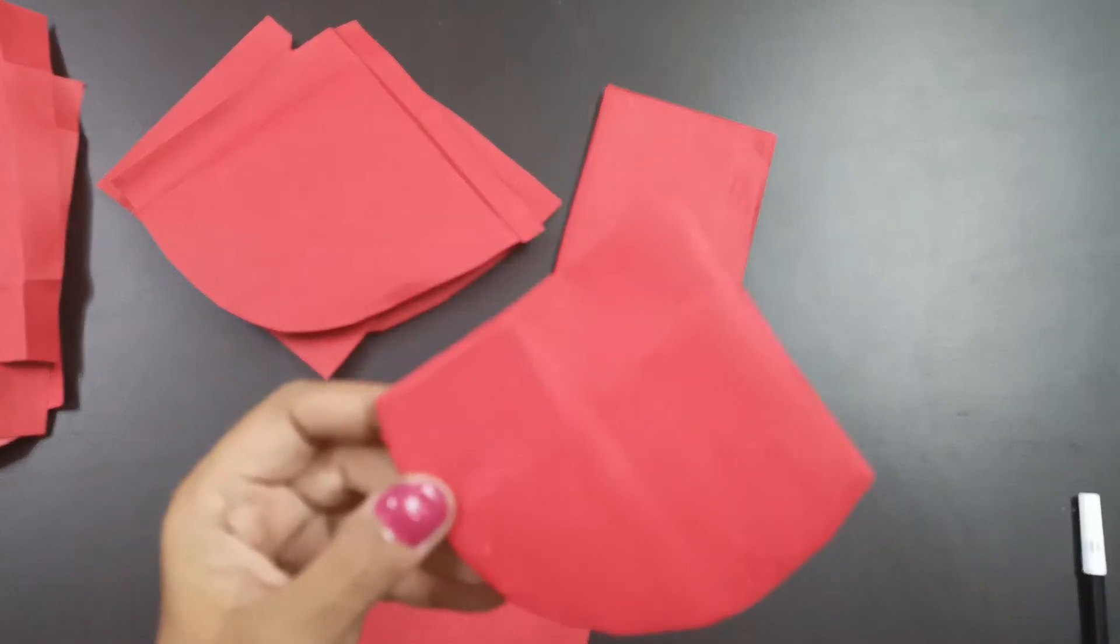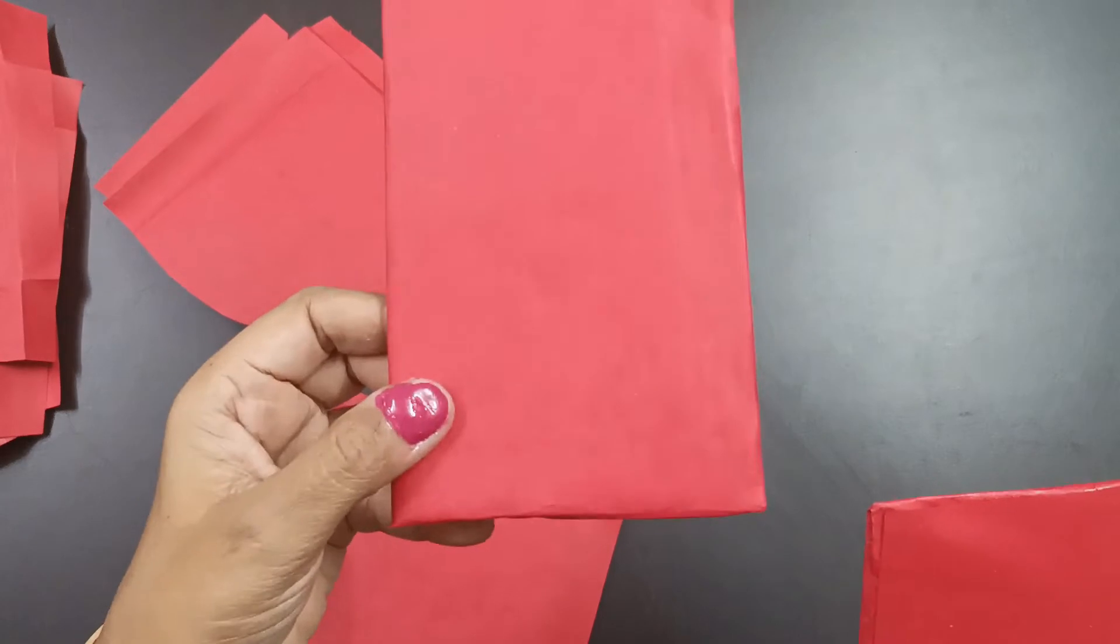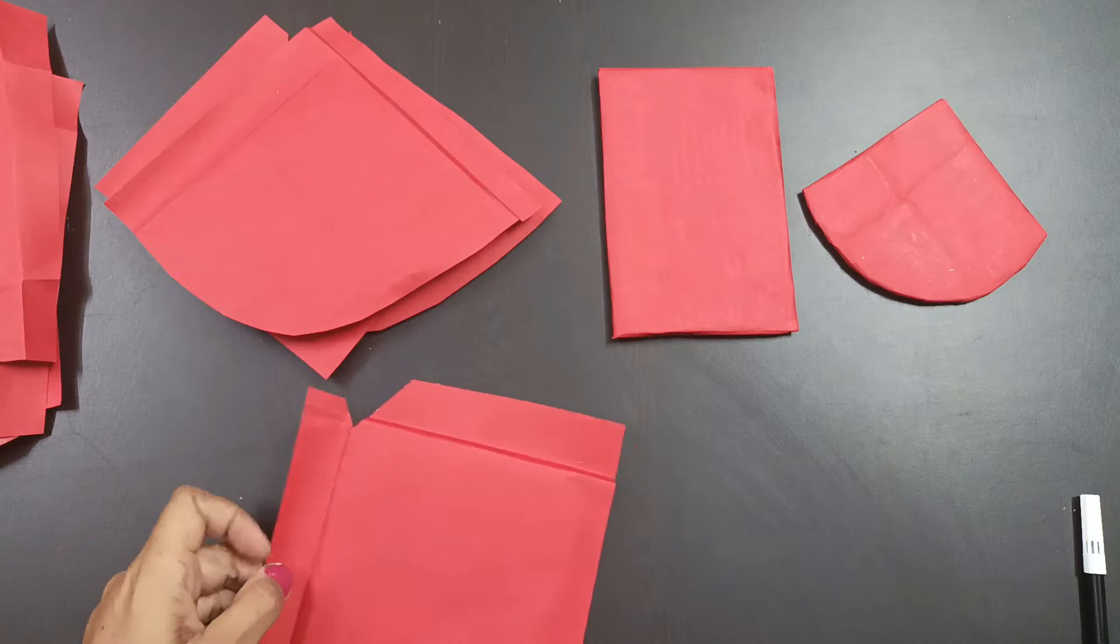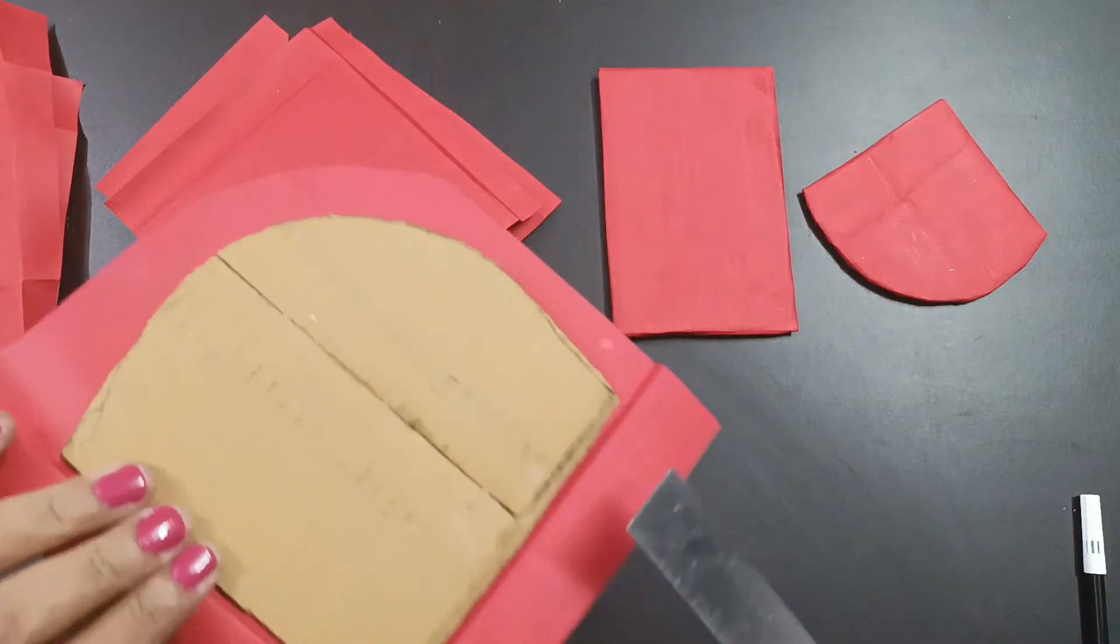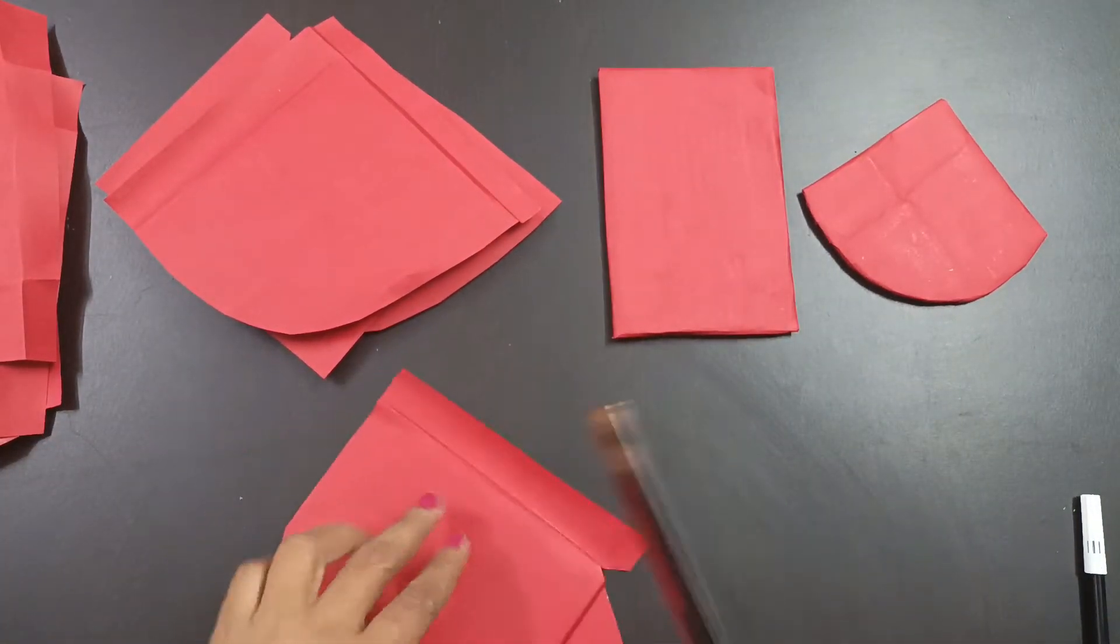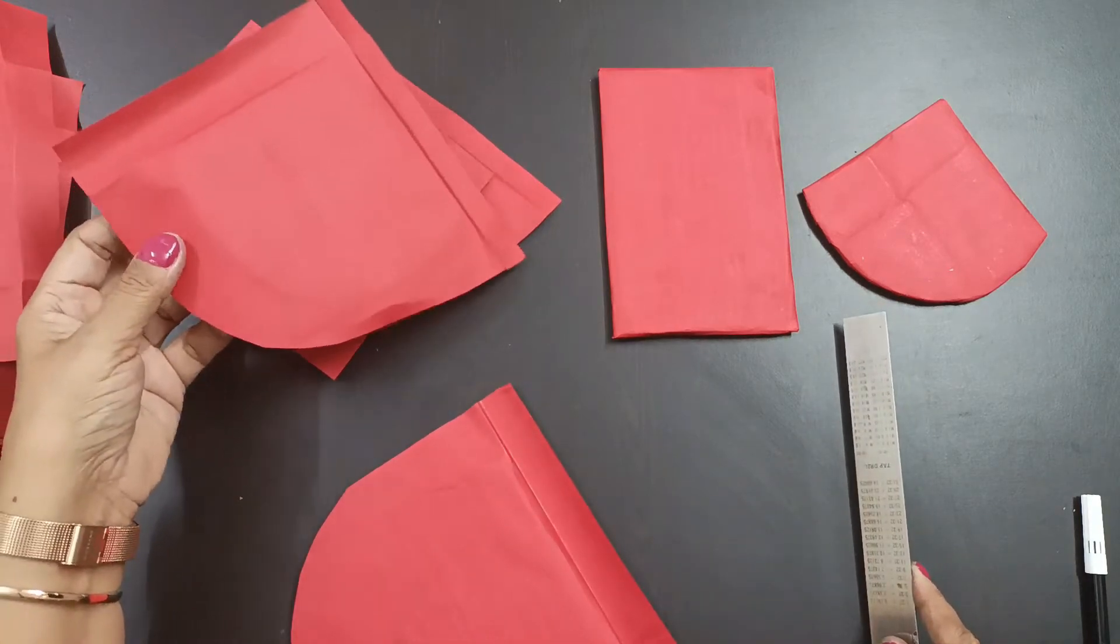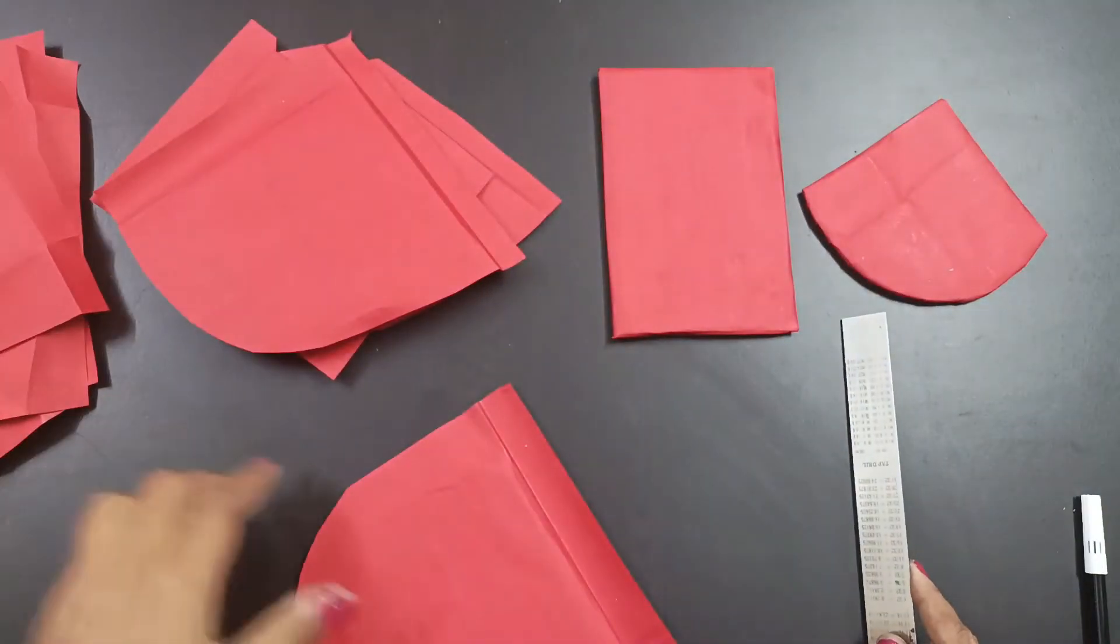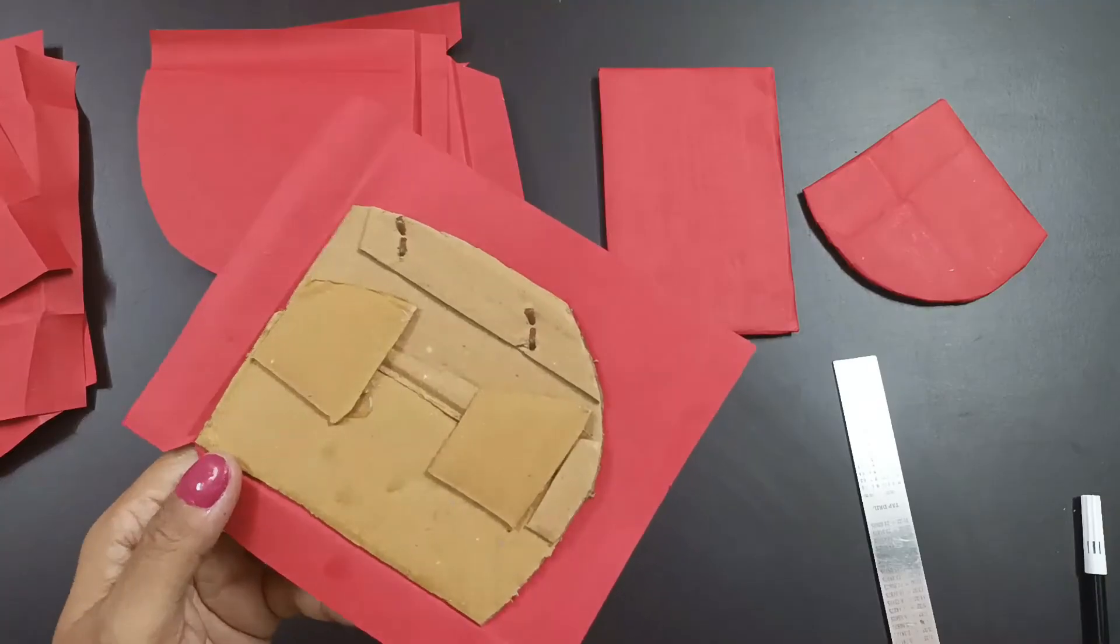Now I have made this one set ready like this from up and behind. This is the rectangular. Now we'll make the other sets also ready, so what you all have to do is stick like this. Then take a scale and just press it like this so that the folds are very clean. I've done it for all. This is also square rectangular color.